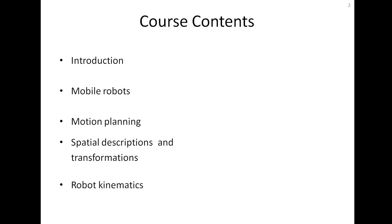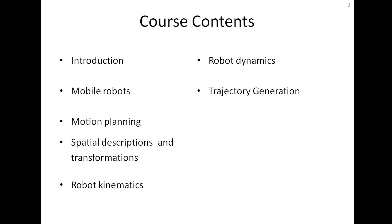After that we shall learn about robot kinematics, covering forward kinematics and inverse kinematics. Then robot dynamics, with equations of motion and a main focus on Lagrangian formulation. After that there will be a topic of trajectory generation, specifically focusing on point-to-point trajectories.